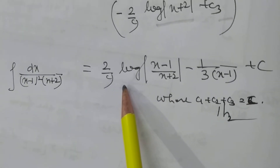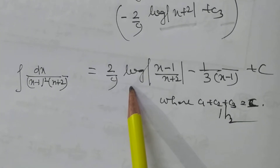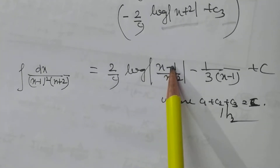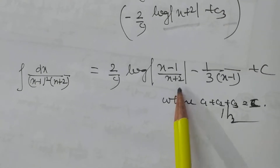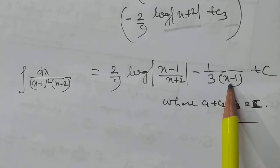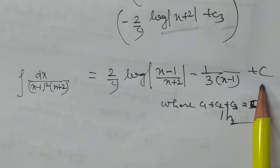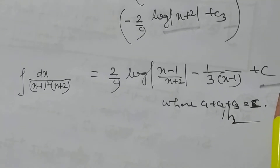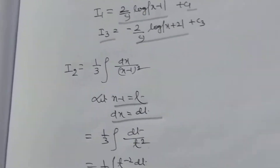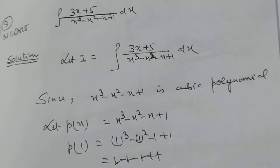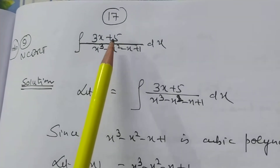So the final answer is ∫x/[(x-1)²(x+2)] dx = 2/9 log|x-1| - 1/[3(x-1)] - 2/9 log|x+2| + c, where c₁ + c₂ + c₃ = c. Now I want to solve problem number 9.